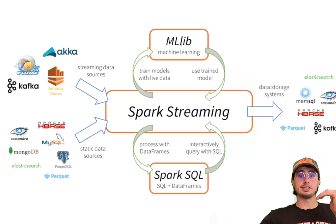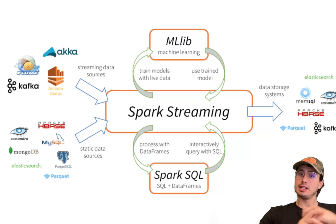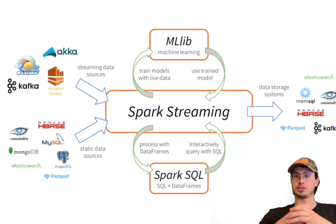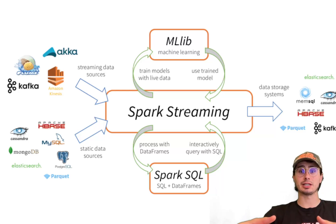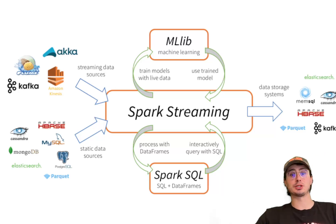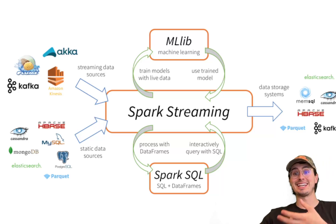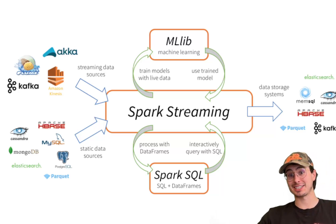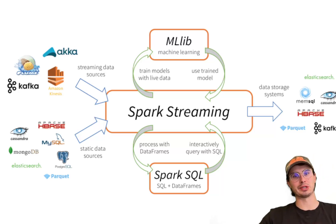Apache Spark is a unified analytics engine for large-scale data processing — fast and general purpose. Its architecture consists of a driver program that orchestrates parallel operations on a cluster of worker nodes. The core component is the Resilient Distributed Dataset (RDD), an immutable distributed collection of objects that can be processed in parallel. Spark supports both batch and stream processing through its Spark Streaming module, which operates on micro-batches. Its execution model is based on DAG (directed acyclic graph) scheduling for fault tolerance and efficient task execution, and it integrates seamlessly with virtually any storage system.